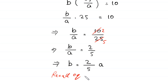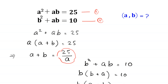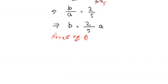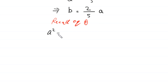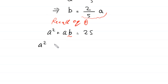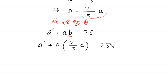Now we recall equation 1: a squared plus ab is equal to 25. In this equation, we replace b with the value 2 over 5 times a. So this equation will become a squared plus a times 2 over 5 times a is equal to 25. This gives a squared plus 2a squared divided by 5 is equal to 25.